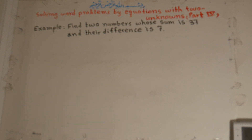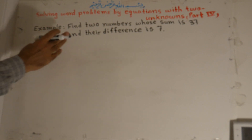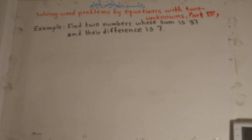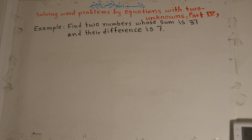Example: find two numbers whose sum is 37 and their difference is 7. It means that we have two numbers. If we add these two numbers, it becomes 37. If we subtract these two numbers from each other, it becomes 7.